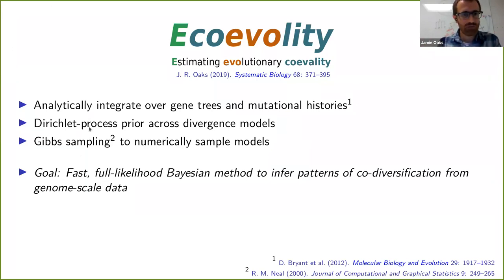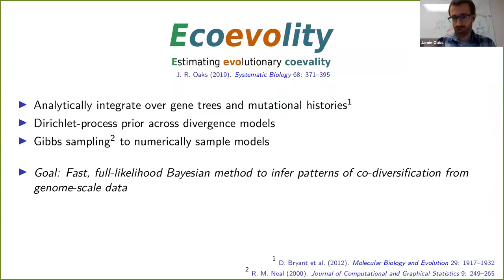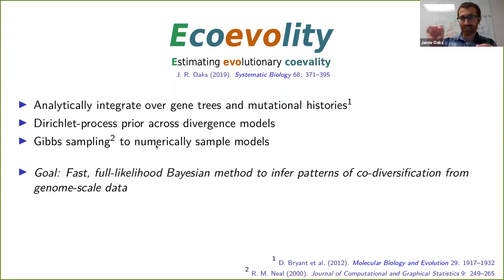We use a Dirichlet process prior to place the probability on all possible models, and then Gibbs sampling — a Bayesian approach that allows us to sample only the models that explain the data well. So this lets the data decide which models are important. That's how we're going to be able to do this.